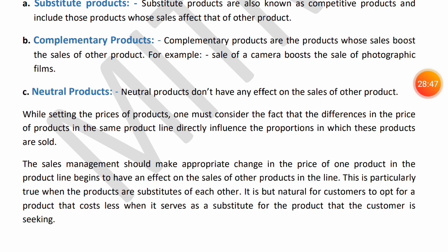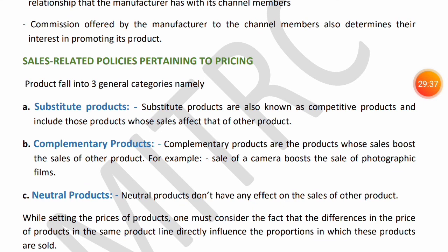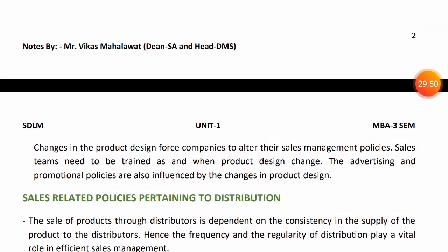Companies making complementary products keep the main product's price lower and the optional/recurring product's price higher - for example, a printer is sold at a one-time price but ink cartridges are sold repeatedly every month. Neutral products have no impact on each other's sales - like tires and biscuits - and their prices are decided independently. When setting prices, you must be very conscious when dealing with substitute products; less so for neutral products. So while making pricing policies, you consider whether your product is a substitute, complementary, or neutral product. This completes the topic of Sales Policies.